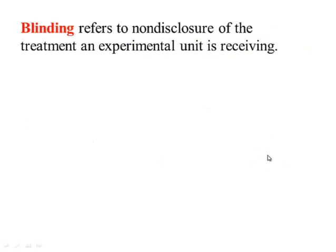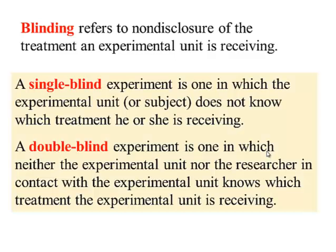Blinding refers to the non-disclosure of the treatment an experimental unit is receiving. There are two types. A single blind experiment is one in which the experimental unit or subject does not know which treatment he or she is receiving. A double blind experiment is one where neither the experimental unit nor the researcher in contact with the experimental unit knows which treatment the experimental unit is receiving — meaning the doctor or person giving the medication does not know if it's the placebo or the treatment.